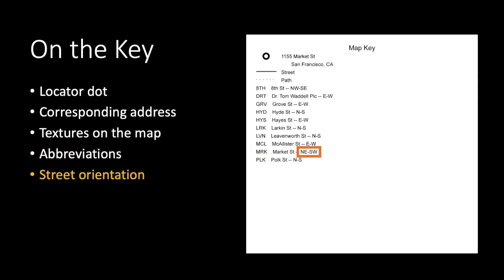For instance, MRK is Market Street and runs northeast to southwest, noted by NE-SW.